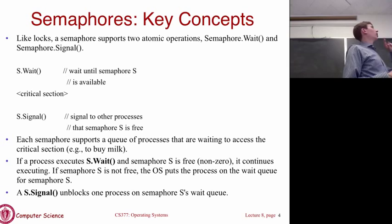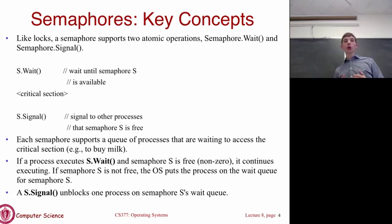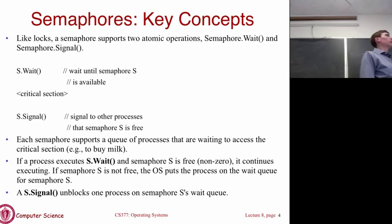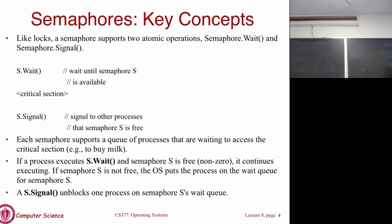A semaphore has two main operations: wait and signal, with a critical section in between. To use it like a lock, you call s.wait — that waits until the semaphore is available — execute the critical section, then call signal to tell other processes the semaphore is now free. Like a lock, each semaphore has a list of processes waiting, and signal tells the next process in line it can go.